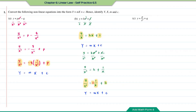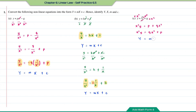Question C: we want to turn y equals p over x squared plus q into a linear equation. For this question, multiply each term by x squared. Therefore, on your left-hand side you get x squared times y. When p over x squared times x squared, the x squared cancels, leaving p plus qx squared. Rearranging: qx squared plus p. Comparing with y equals mx plus c: x squared times y is the y, q is the m, x squared is the x, and p is the c.